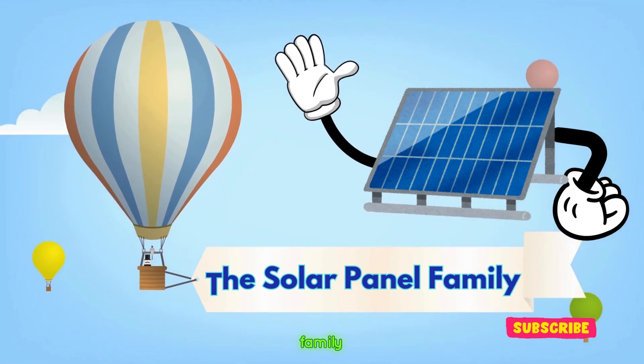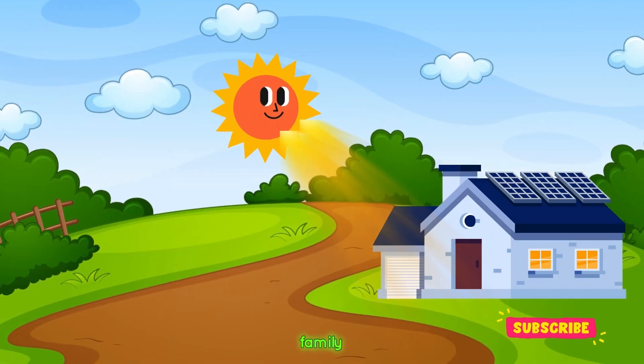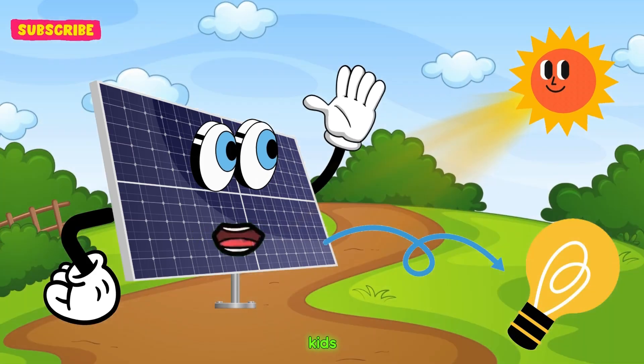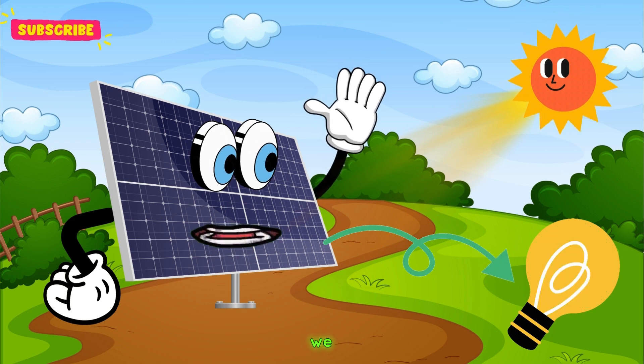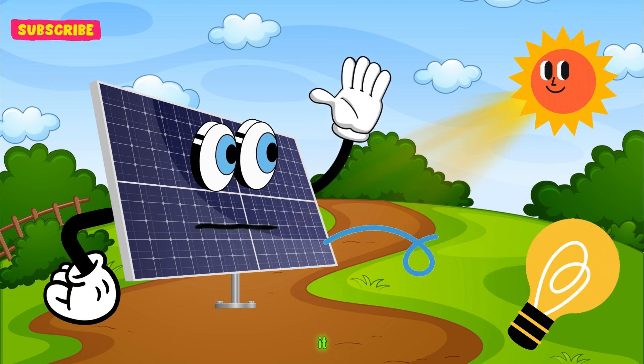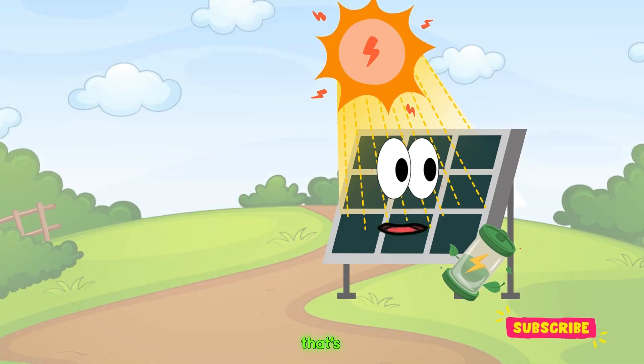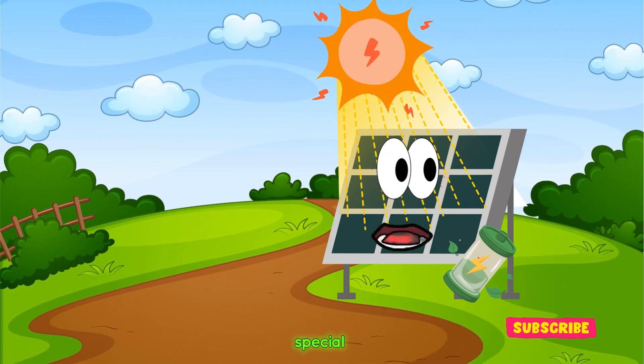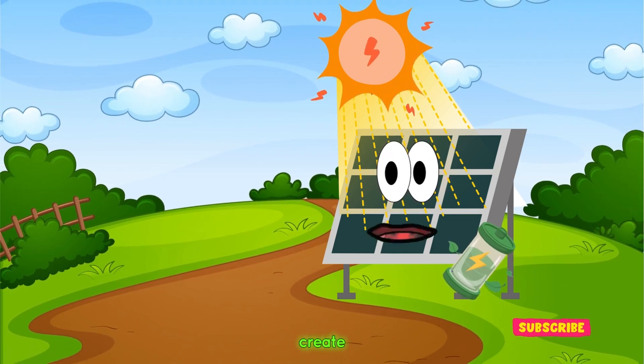The solar panel family. Meet the solar panel family. They live on rooftops and love to soak up Sunny's rays. There's Polypanel, Peterpanel, and Babypanel. Hi kids! We are solar panels. We catch sunlight and turn it into electricity. That's right! When Sunny shines on us, we use special cells called solar cells to create power.